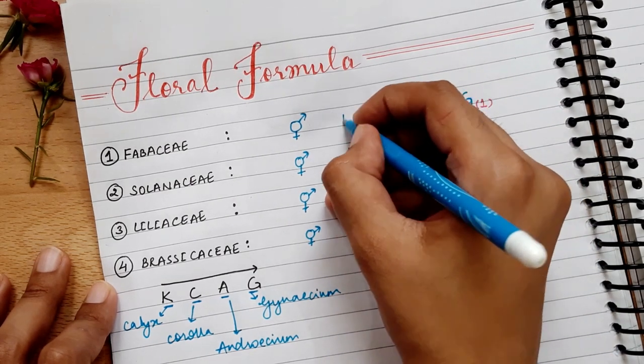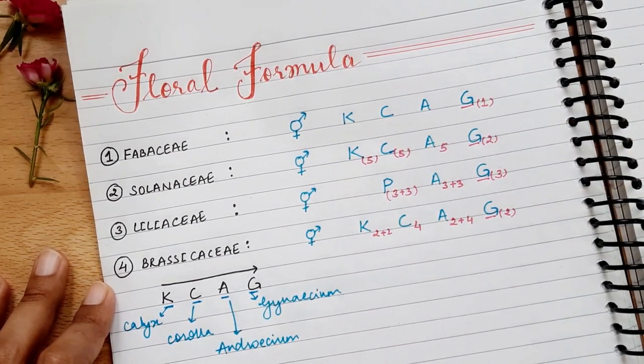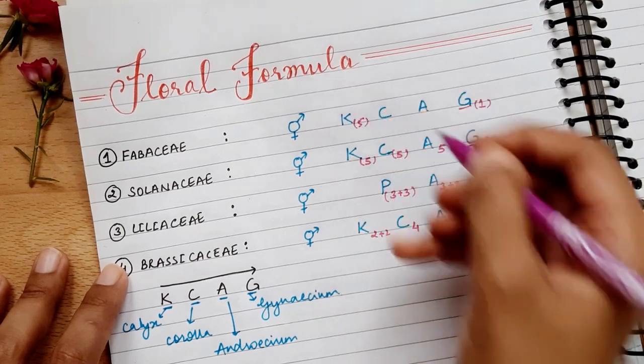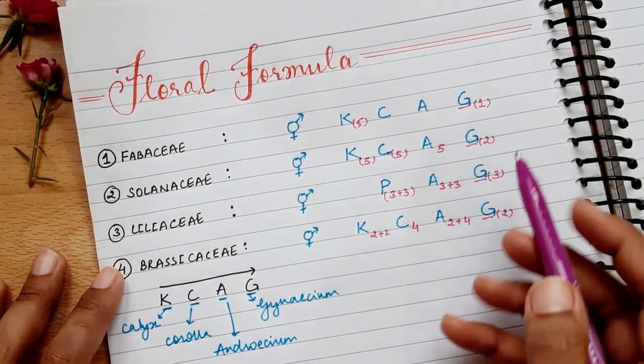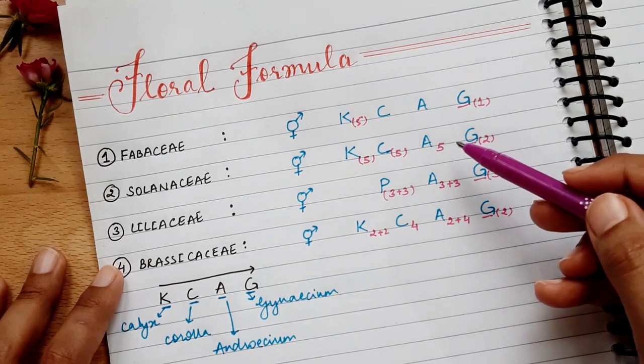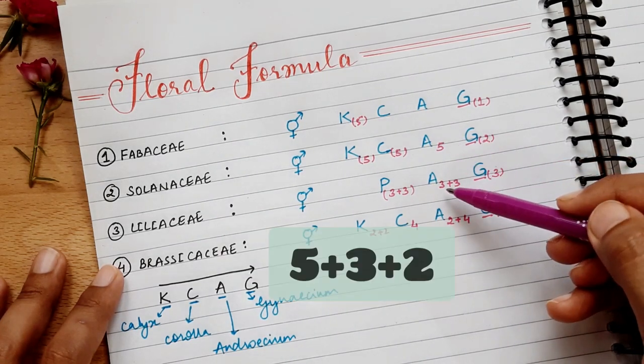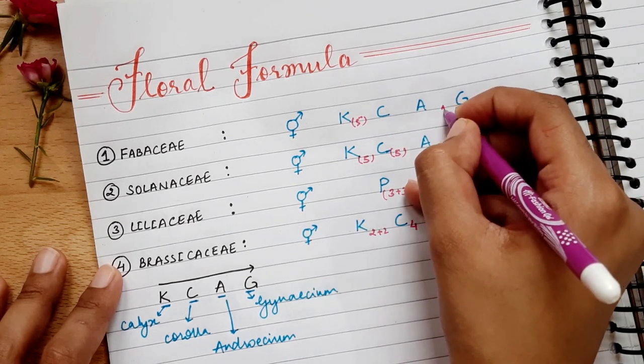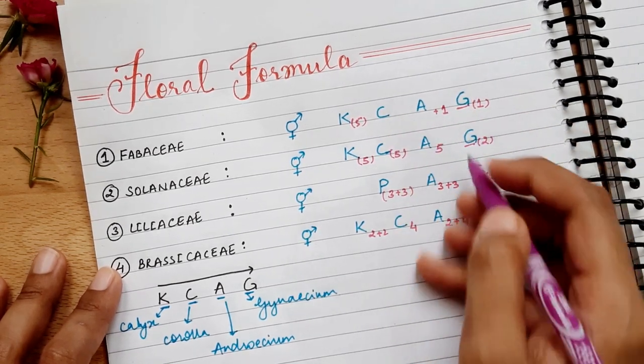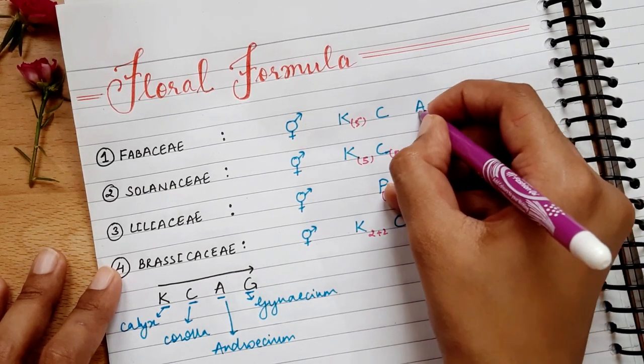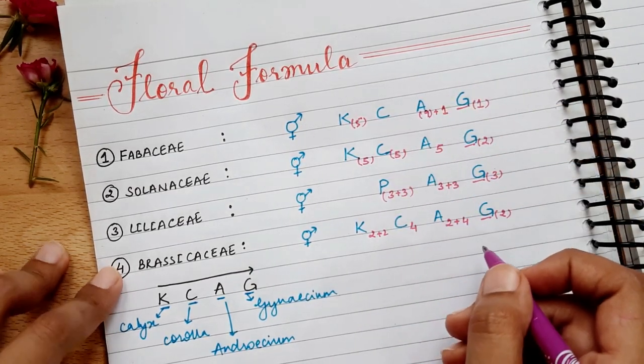Now coming to the last family, which is Fabaceae. So this is K, C, and A are a little different. So I will copy the K from the bottom: 5 and fused. Now for this A, we will see the bottom A's: 5, 3, 2. Now when we add them, 5 plus 3 plus 2, we get 10. But this 1 is important, so we will write it individually: 1. And 10 minus 1, we get 9. Now we will write it 9 and make a bracket.